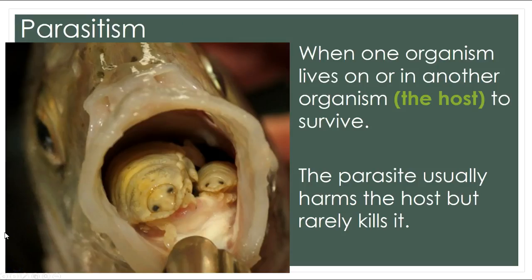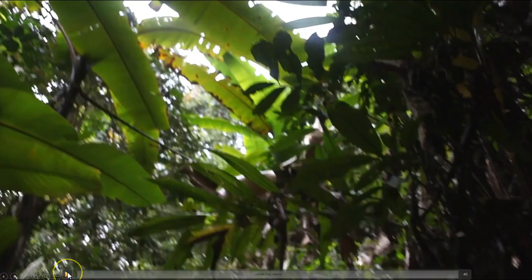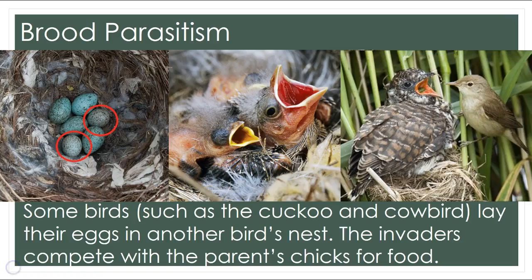Another type of interaction in an ecosystem is parasitism, where one organism lives on or in another organism — known as the host — to survive. The parasite usually harms the host but rarely kills it, as that would not be beneficial to the parasite. Another type is brood parasitism, where birds lay their eggs in another bird's nest and the invaders compete with the parent's chicks for food. Examples include the cuckoo and the cowbird.